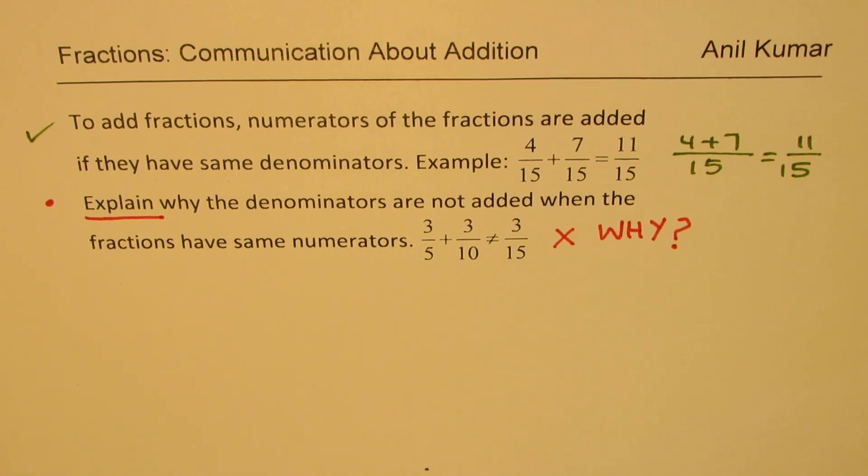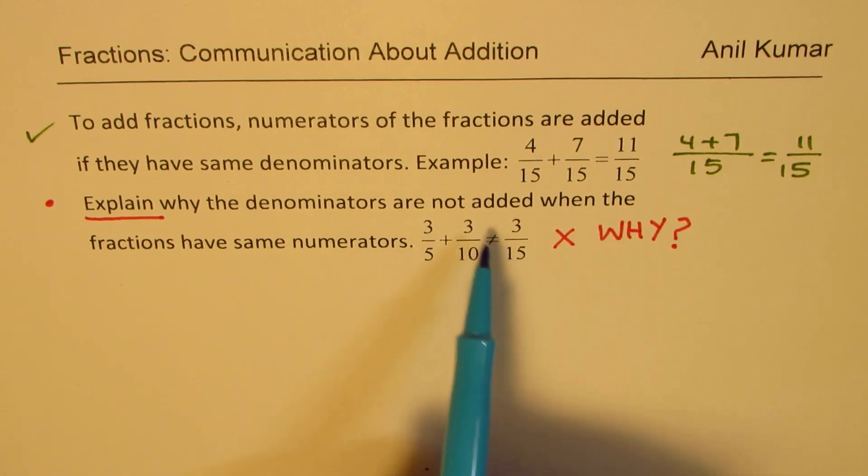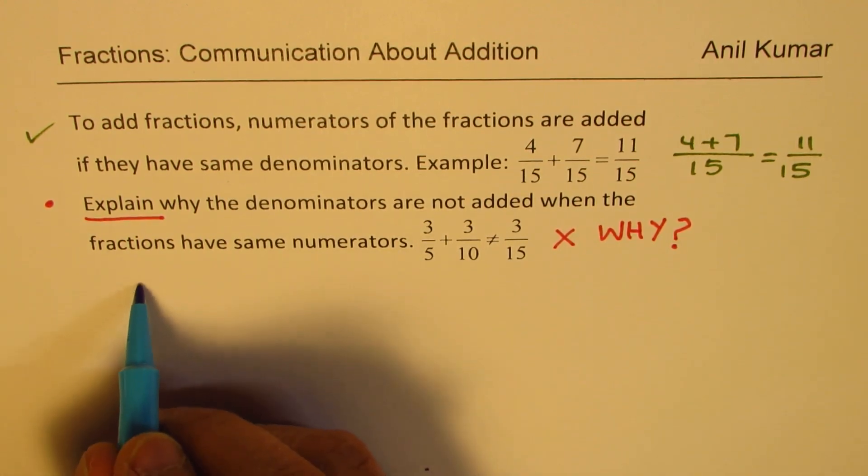How do we explain it? That is the major question which is going to be addressed in this particular video. So let's try to understand the concept and we'll get to this why we are not adding the denominators when the numerators are exactly same, as in our case 3 over 5 plus 3 over 10.